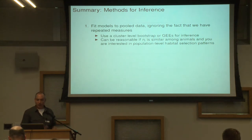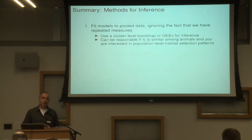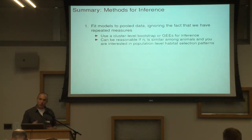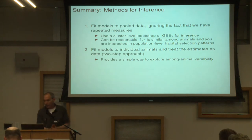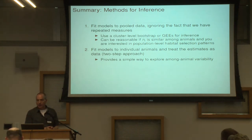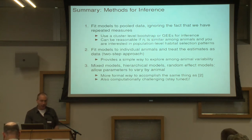So to summarize, what are your options? Well, one is you could fit models to pooled data, particularly if you've got equal numbers of observations for each individual and you're just interested in overall patterns — where are these individuals most likely to be found — and then do something like a cluster-level bootstrap to get honest estimates of uncertainty. You can fit models to individual animals and then treat the estimates as data — a two-step approach, which I tend to like myself quite a bit. Or you can try and fit mixed effect models and do everything in one step, but that can be pretty challenging.